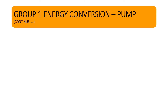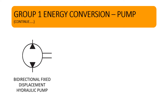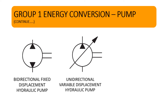If you draw another dark triangle on the opposite side of the previous one, it becomes the symbol for a bidirectional fixed displacement hydraulic pump. For converting the symbol from fixed displacement to variable displacement pump, draw an arrow with an inclination of approximately 45 degrees passing through the circle, as shown in the figure. This symbol is for a unidirectional variable displacement hydraulic pump. Similarly, to make a bidirectional variable displacement pump, draw the arrow the same way.